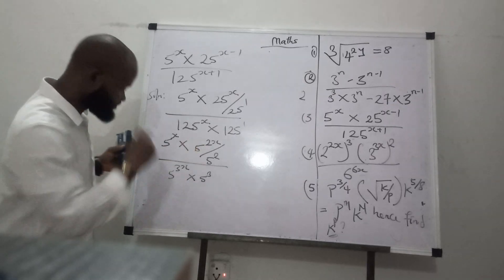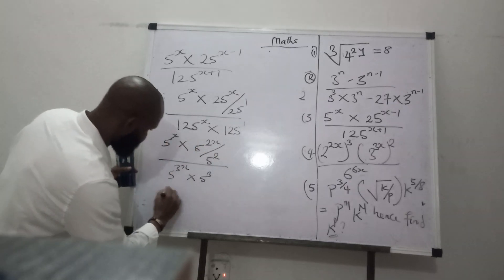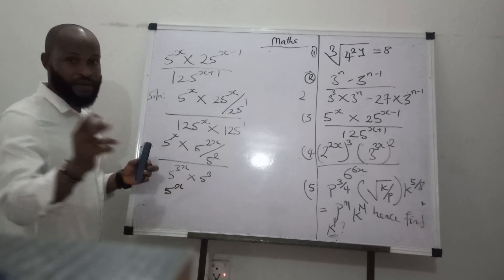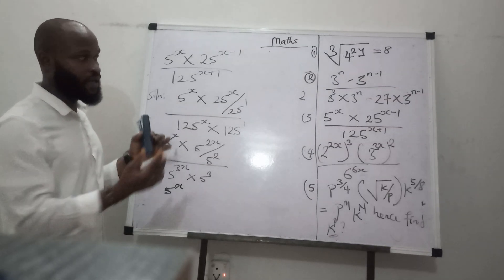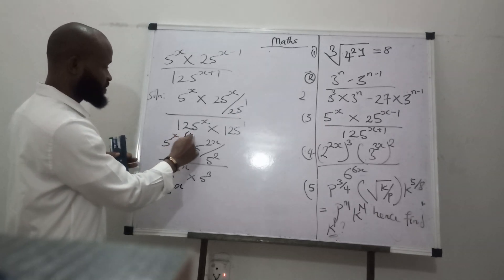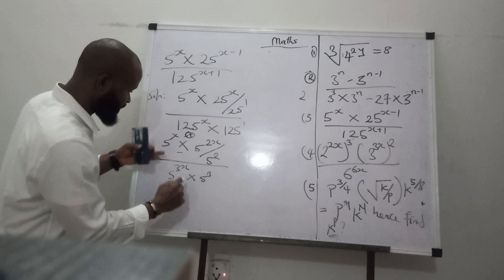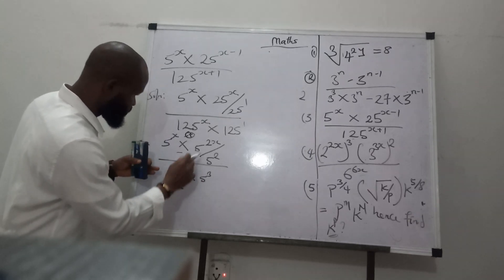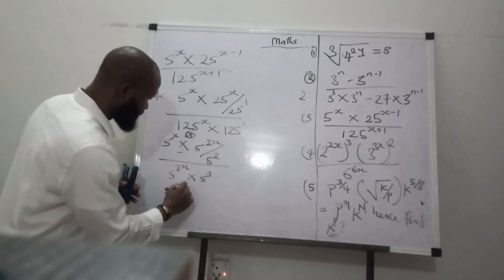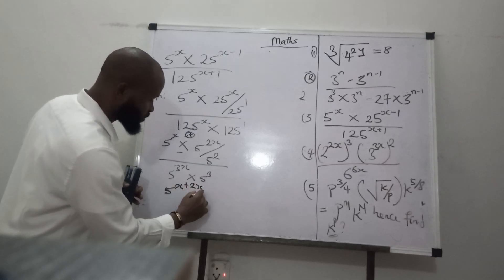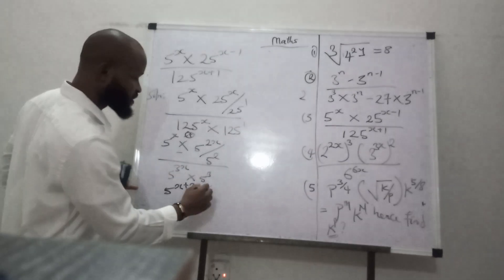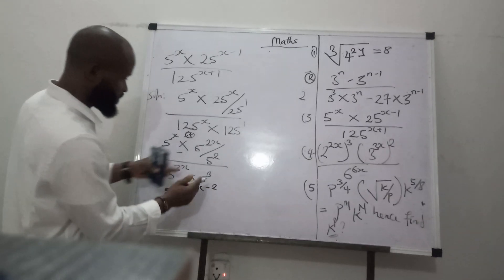We can go ahead and say 5 raised to the power of x. Remember, in indices, when I talk about indices, I said multiplication means addition. So we can say 5x times 25 is 5 raised to the power of 2x. So we can say plus 2x — correct — minus division, which is minus, over 2. This is what this means.